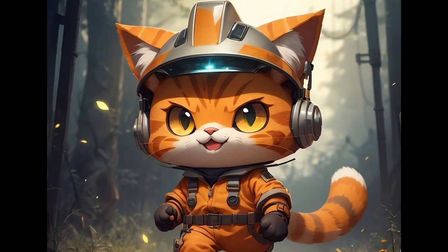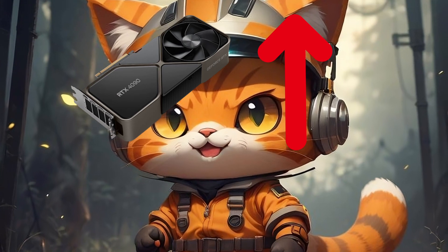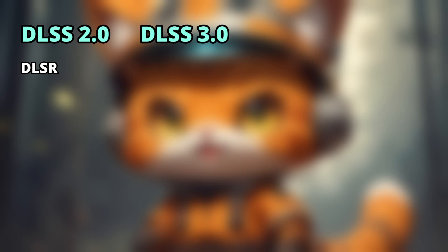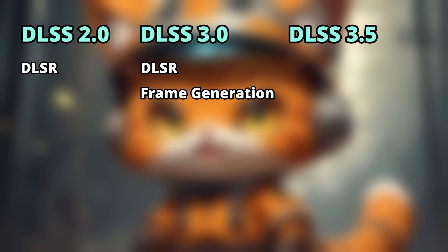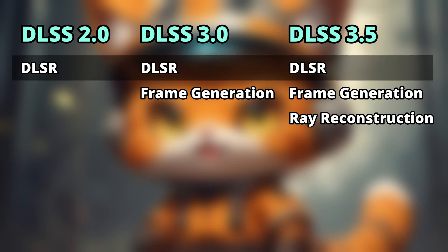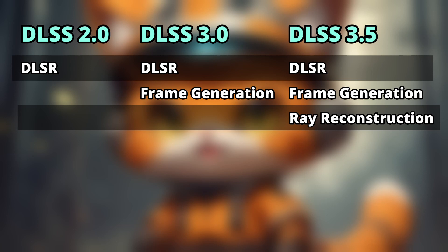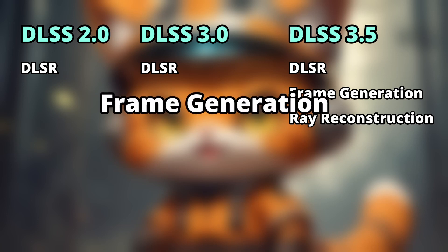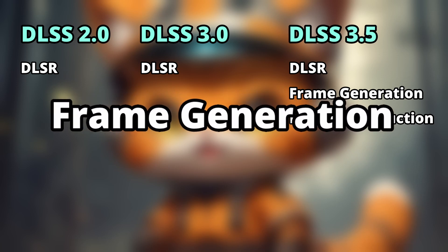Now let's talk about the confusion about DLSS 3.0 only working on RTX 40 series and above. DLSS 2.0 contains DLSR. DLSS 3.0 contains DLSR and frame generation. DLSS 3.5 contains DLSR, frame generation, and ray reconstruction. Deep Learning Super Resolution and Ray Reconstruction work on all RTX graphics cards, but frame generation only works on RTX 40 series and above — and that's where the confusion is.